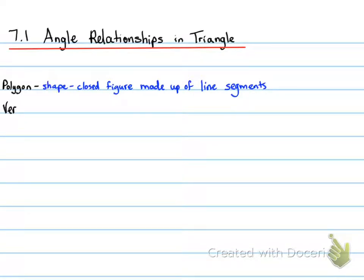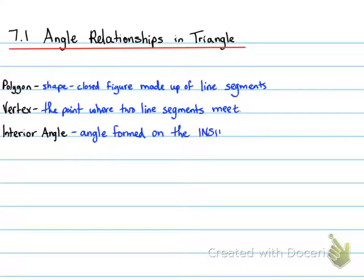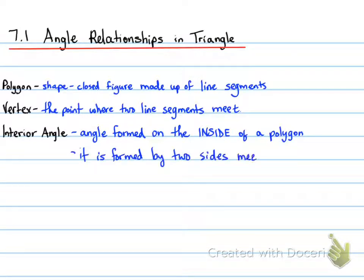A triangle is a special type of polygon. A vertex is the point where two line segments on any polygon meet — that's known as a vertex or a corner point. An interior angle is an angle that is formed on the inside of a polygon, formed by two sides meeting at a vertex on the inside of a shape.